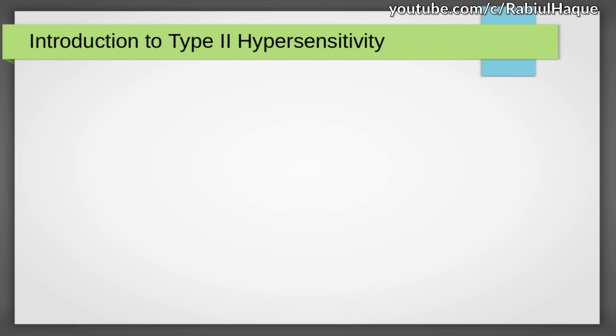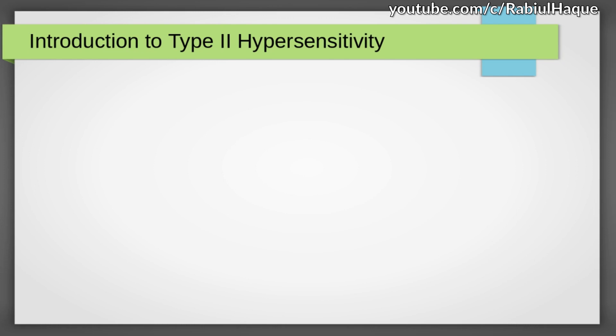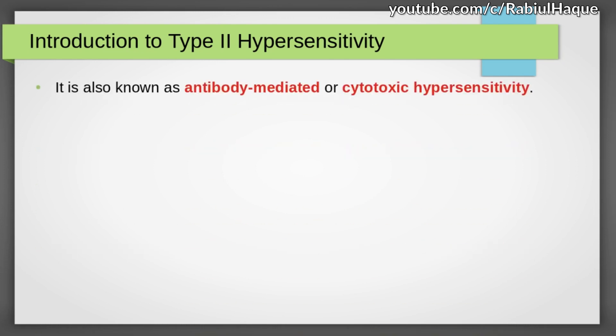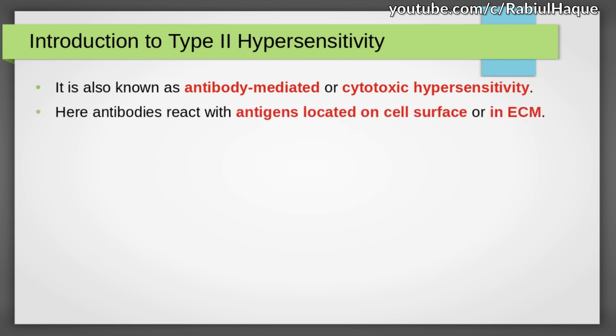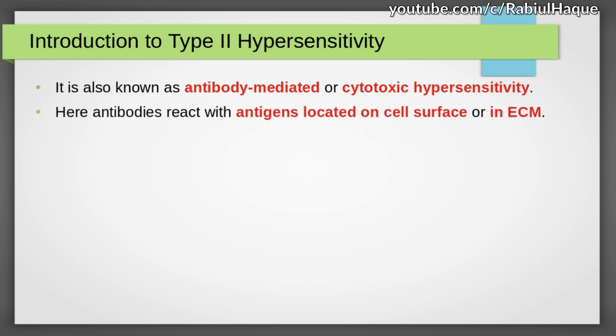First, let's talk about some introductory points regarding type 2 hypersensitivity. It is also known as antibody mediated or cytotoxic hypersensitivity. Why are we calling this antibody mediated? Because here, antibodies are produced in response to antigens that are located on cell surface or in the extracellular matrix, and that causes hypersensitivity as we will see.